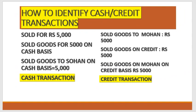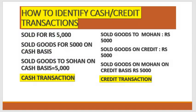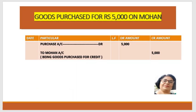इसी तरह अगर sale होती है, तो किस तरह से हमने identify करना है कि यह cash की transaction है या credit की transaction है। जैसे 'goods sold for ₹5,000' — अगर यहाँ पे कुछ नहीं mention किया हुआ, party का नाम नहीं mention किया हुआ, तो assume करेंगे कि यह cash basis पे है। उसी तरह 'sold goods to Sohan on cash basis' — यहाँ पे भी party को cash माना जाएगा। तो यह तीनों cases में जो transaction है वो cash की है। और 'sold goods to Mohan ₹5,000', 'sold goods on credit ₹5,000', 'sold goods to Mohan on credit basis ₹5,000' — यहाँ पे party का नाम mention किया हुआ है, cash के बारे में कुछ नहीं लिखा हुआ, तो वो उधारी की transaction है।